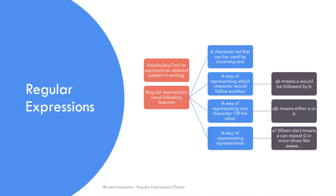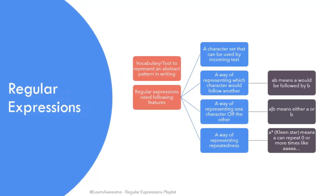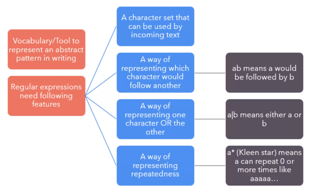To make a regular expression represent a string of incoming characters, it uses, among others, the following features: a character set that can be used by the incoming text; a way of representing which character follows another, known as concatenation — so 'AB' means A is followed by B; a way of representing one character or the other, called alternatives — so 'A|B' means either A or B; and finally a way of representing repeatedness, called the Kleene star after mathematician Stephen Kleene, which means the preceding character can appear zero or more times. These four features are said to be sufficient to define a regular language, and they capture the sequencing, optionality, and repeatedness in the input string.